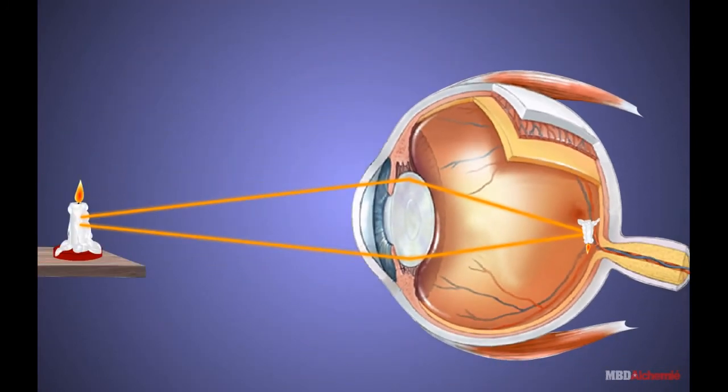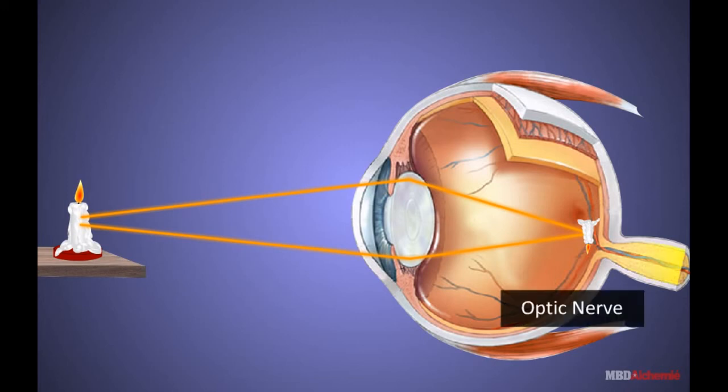These photoreceptors convert light energy into electrical energy. These electrical signals produced by the retina reaches the brain by optic nerves.